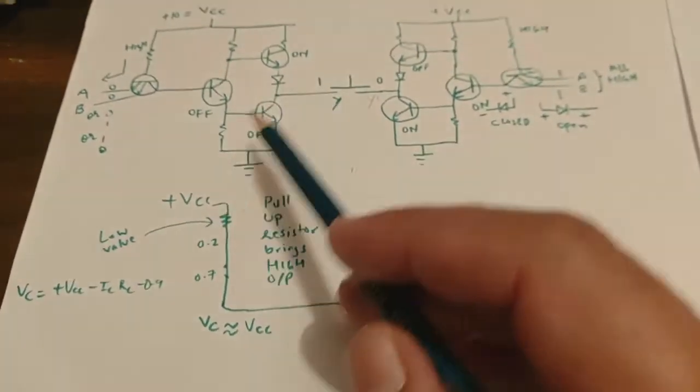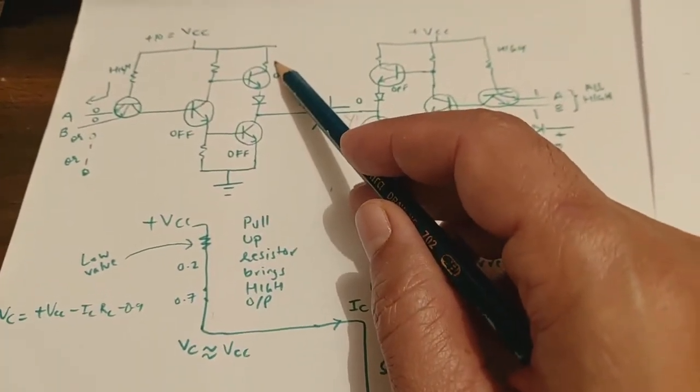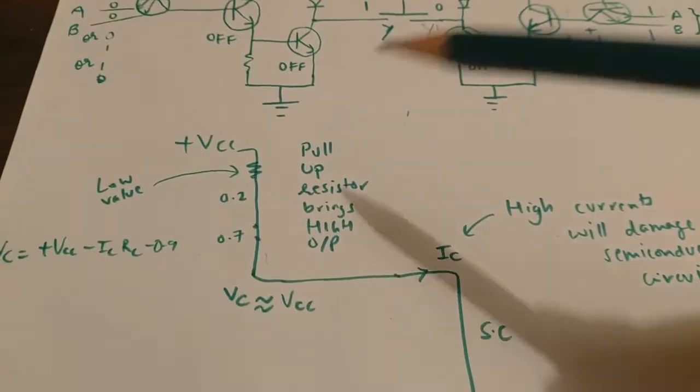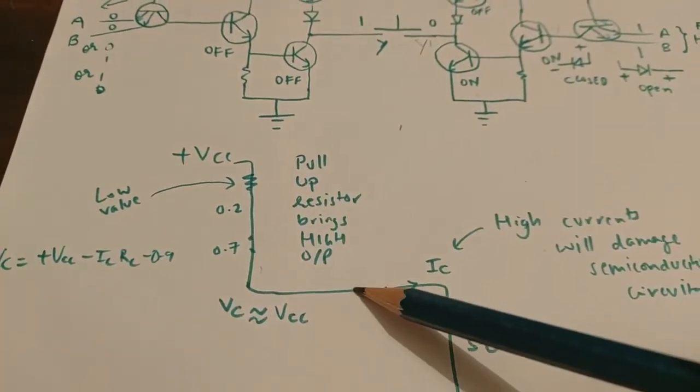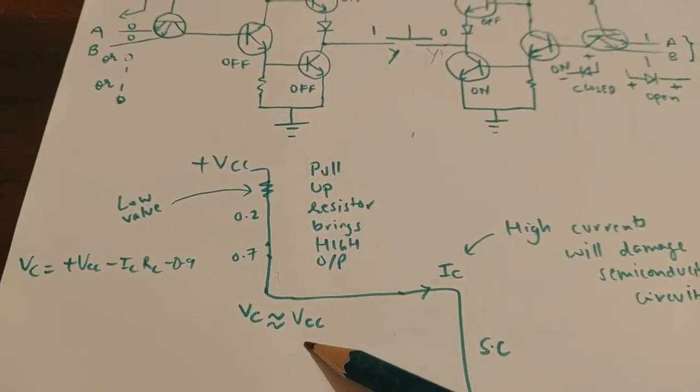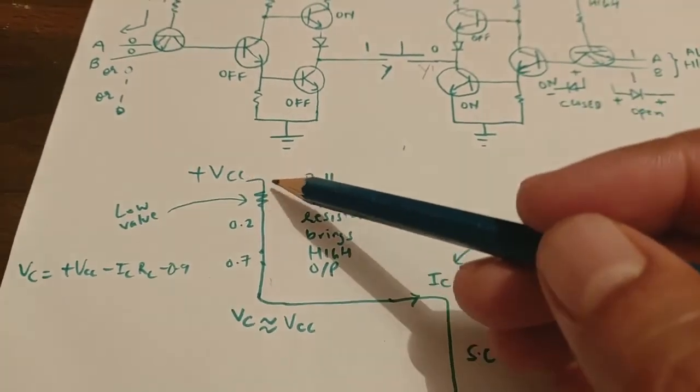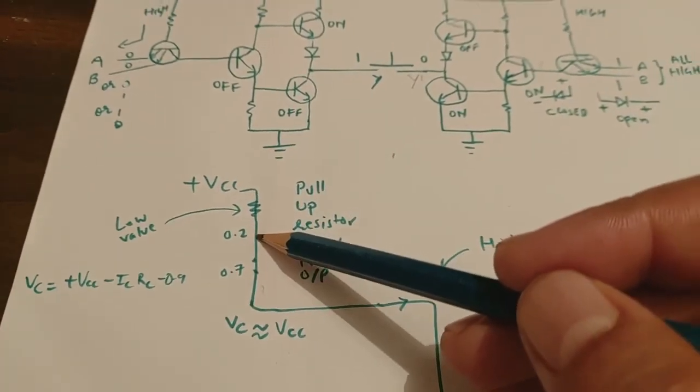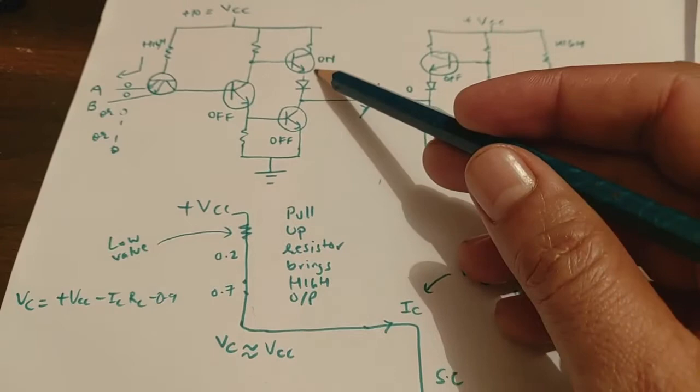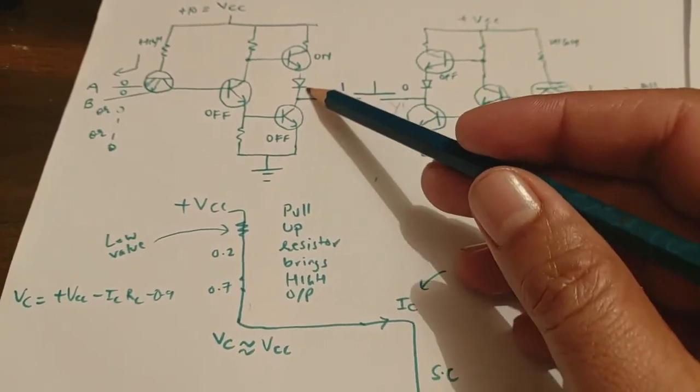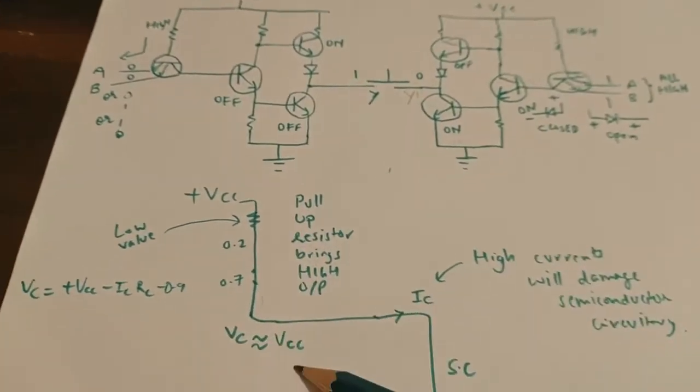This pull-up resistor will pull up the output voltage nearly equal to VCC, which will be technically VCC minus IC·RC minus 0.2 short circuit voltage of BJT and diode forward bias voltage. Nearly it is equal to high voltage VCC.